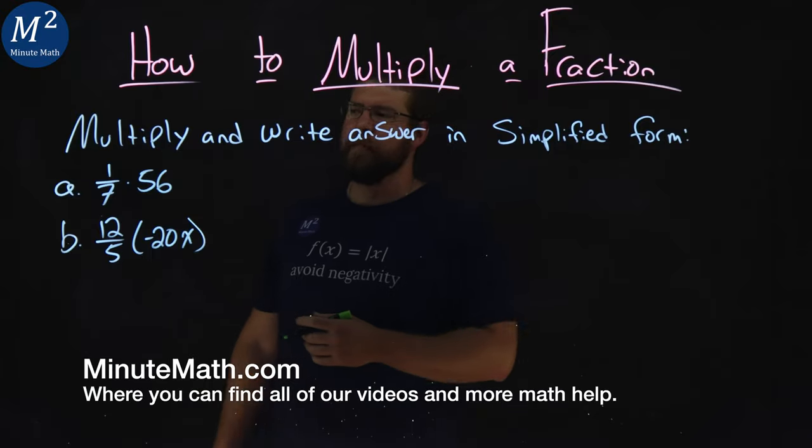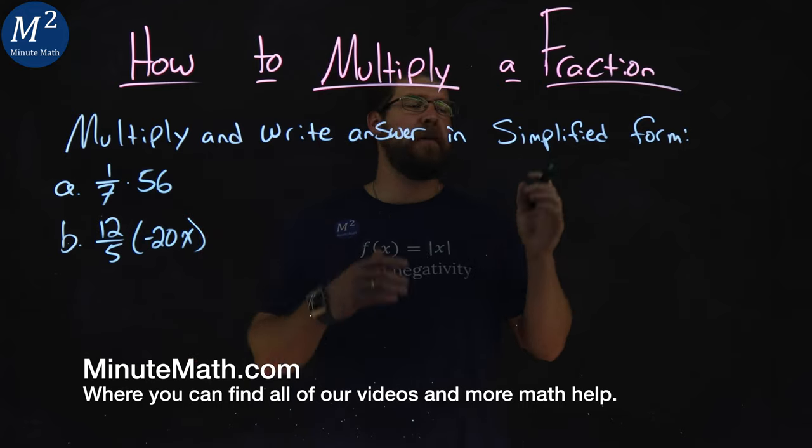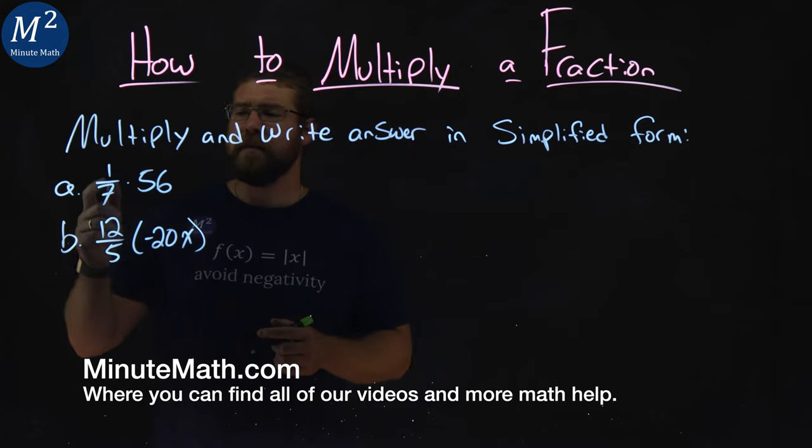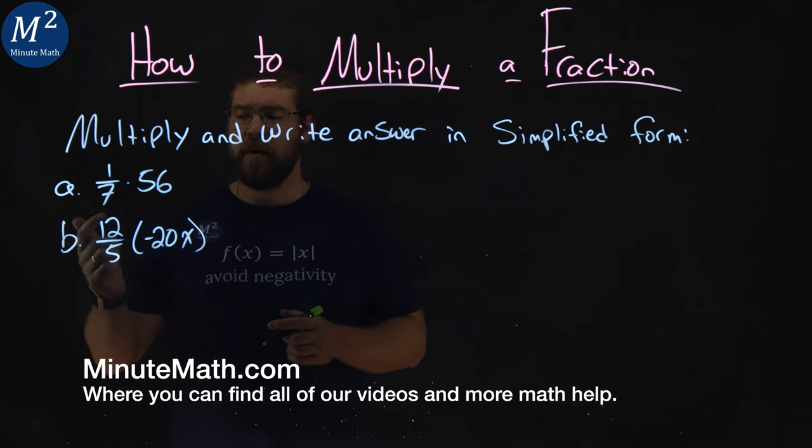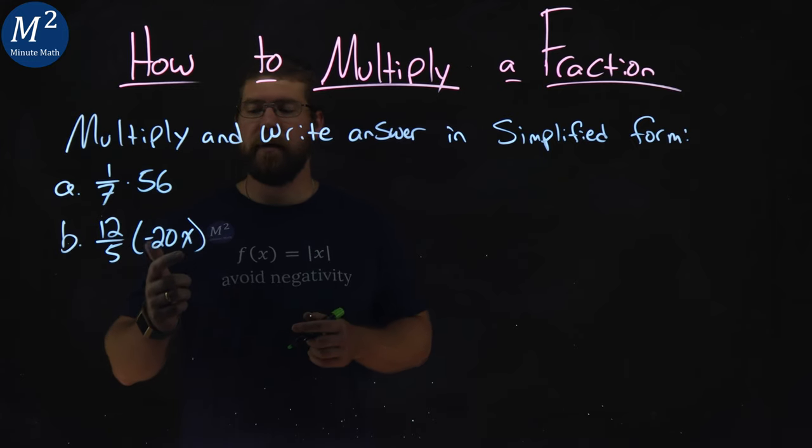We're given this problem here. Multiply and write answer in simplified form. We have two parts: A, 1/7 times 56, and B, 12/5 times negative 20x.